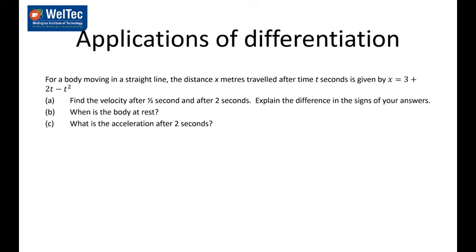This question requires you to find the velocity, which is the derivative of the distance function, then find it when x is a half and when x is 2. When x is a half the velocity is 1 meter per second, and when x is 2 it's negative 2 meters per second. The difference in answers means the body has changed direction. When the body is at rest, v equals zero — the velocity function is 2 minus 2t, so solving gives t equal to 1.